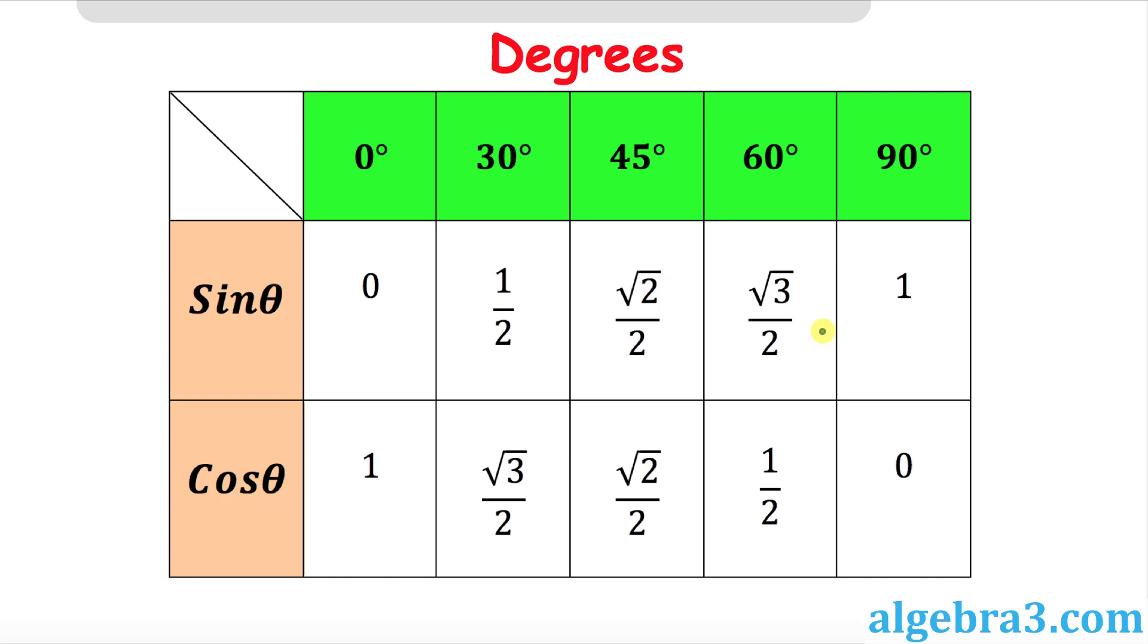In this step, I simply filled out those values I just showed you: 0, 1 over 2, square root of 2 over 2, all the way to 1. That is our complete trigonometric ratios table for degrees. Watch out—this is for degrees.